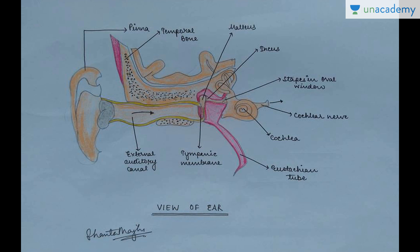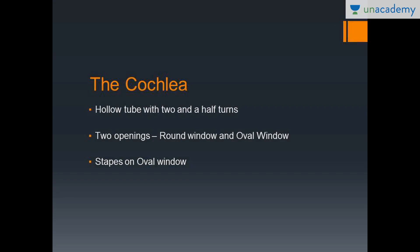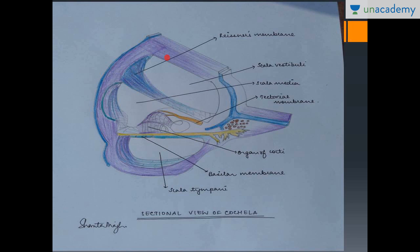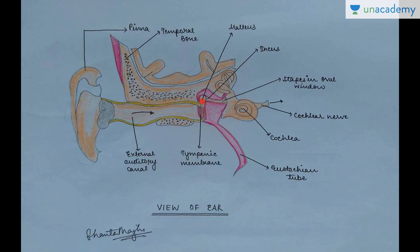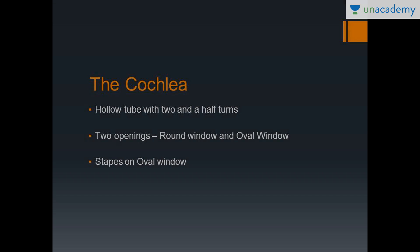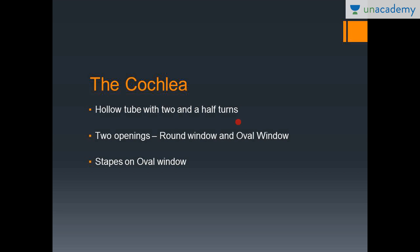The sound moves into the ear through the external auditory canal and sets the tympanic membrane into vibration. This tympanic membrane sets the malleus into vibration, then the incus, and then the stapes. From our knowledge of anatomy, the stapes lies on the oval window, and the oval window is connected to the scala vestibuli, which is part of the cochlea. So the vibration is set up in the cochlea. The vibration moves from the external auditory canal to the tympanic membrane to the stapes sitting in the oval window.